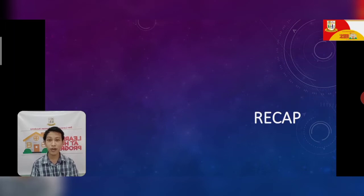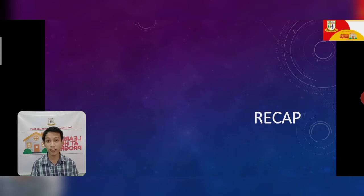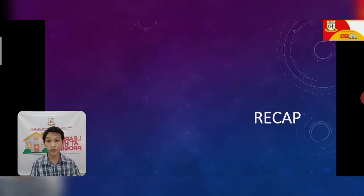In our lesson number 1, we discussed about the different ways of how representative animals reproduce. You learned the different ways they reproduce using the processes of budding, fragmentation and regeneration, and parthenogenesis. Now, this is still a continuation of our unit number 1 which is all about perpetuation of life.